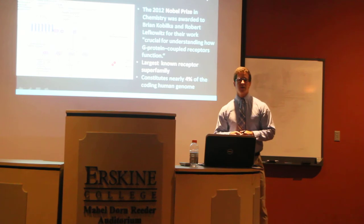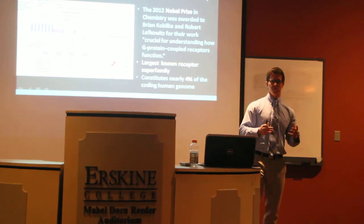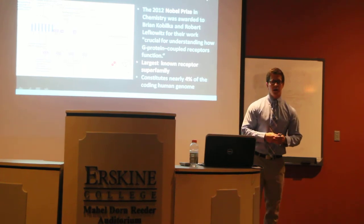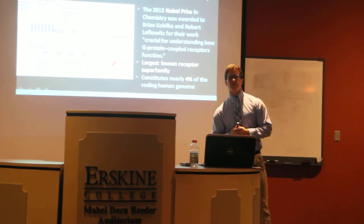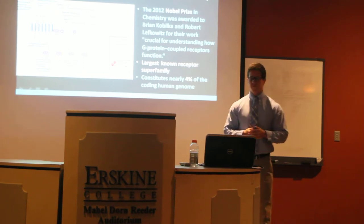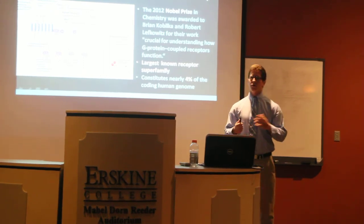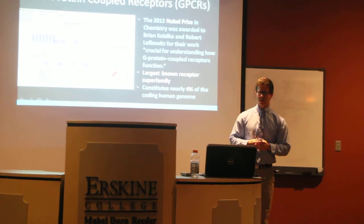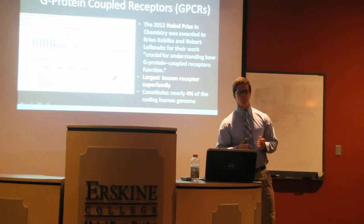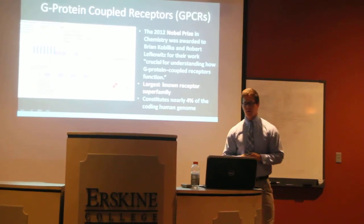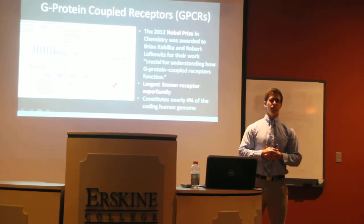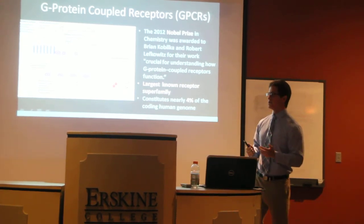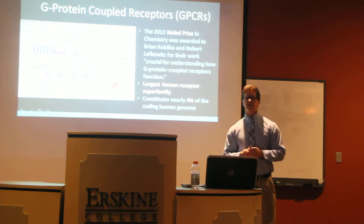I'll start off with these proteins — what are they? They're known as G-protein-coupled receptors, or GPCRs for short. In 2012, they actually won the Nobel Prize in Chemistry for Lefkowitz and Kobilka and their co-workers for their work crucial to understanding how G-protein-coupled receptors work. These are actually the largest known receptor family and constitute 4% of the entire human genome. A major reason they are a hot topic for modern research is because they're a target for nearly 40% of all modern pharmaceuticals.